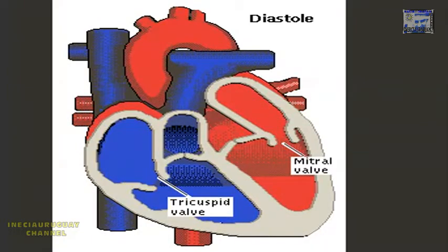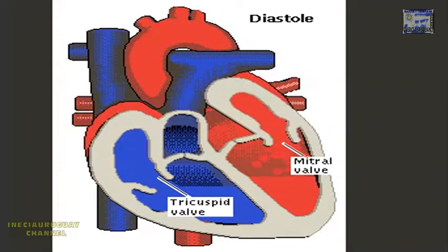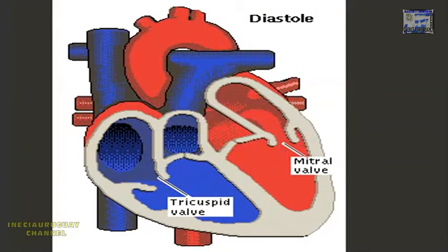Rising pressure in each auricle opens the tricuspid and mitral valves, and blood flows into the ventricles. Each auricle contracts, filling the ventricles to capacity.